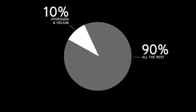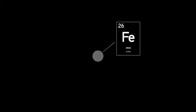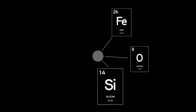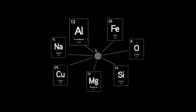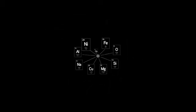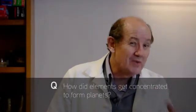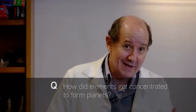Yet, if we look at our Earth, we'll find that 90% of the Earth is made up of elements like iron, oxygen, silicon, magnesium, and other elements created in supernovae and dying stars. So, how did they get concentrated like this to form planets and bodies like that?